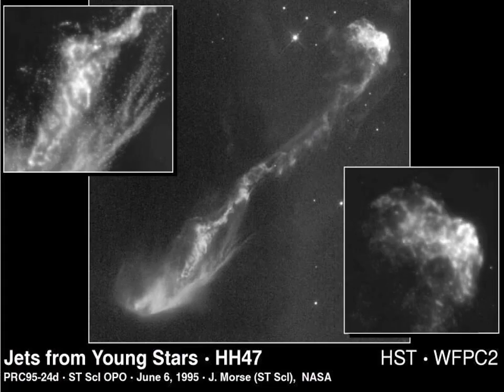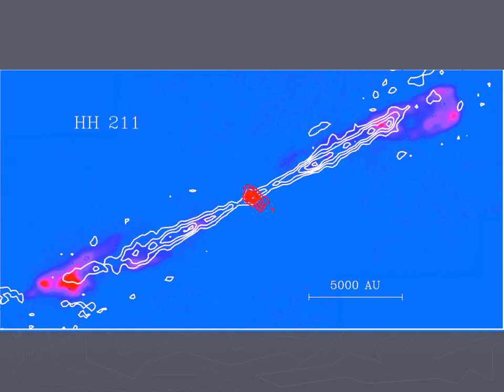Here are more pictures of Herbig-Haro objects. This is a combination of a visual image — the pink colors — and squiggly lines which are radio intensity maps from the Very Large Array, showing where the jets are and where the visible emission is.